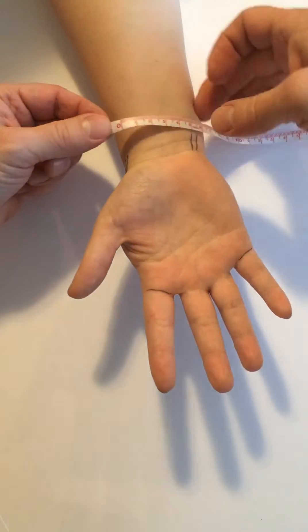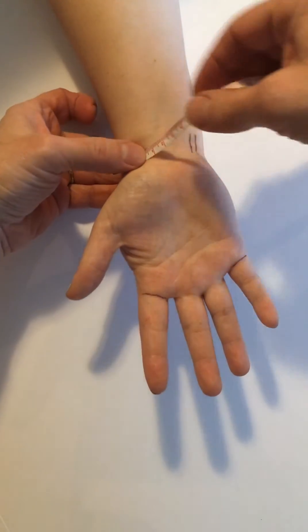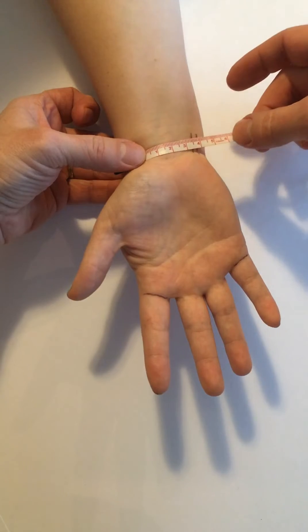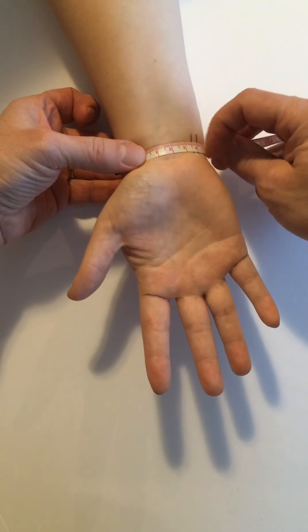So it looks like it's this guy right along here. We're just going to set that down about there and then from the radial aspect go ulnarly, again staying just proximal to that distal wrist crease with our tape.